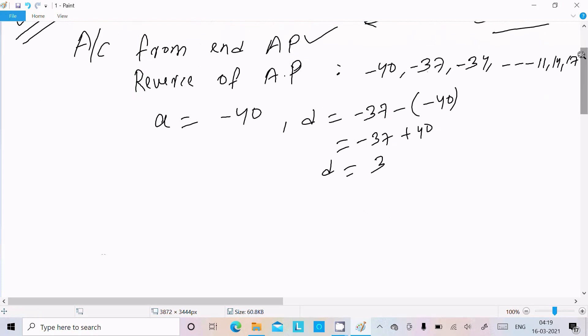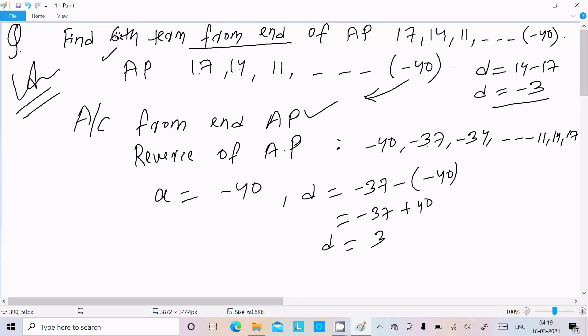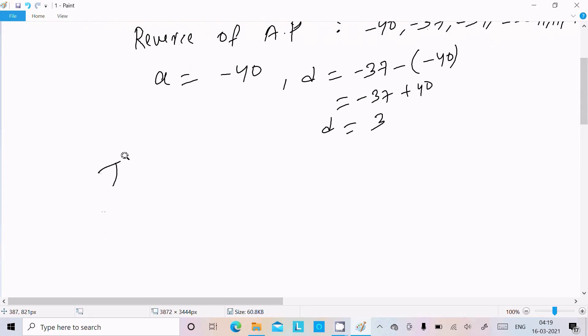Now we need to calculate the sixth term, so write here T6. So nth term formula we already know: Tn equal to a plus n minus 1 into d. So here write T6 equal to a value is minus 40 and n is 6 minus 1, difference is 3.